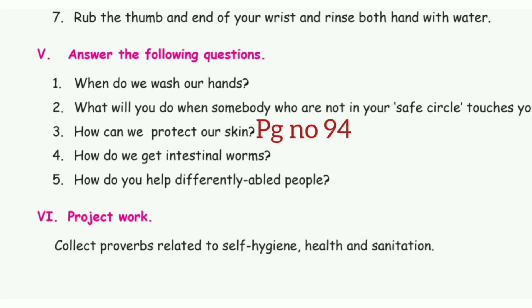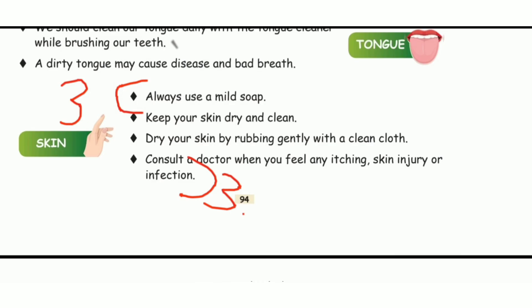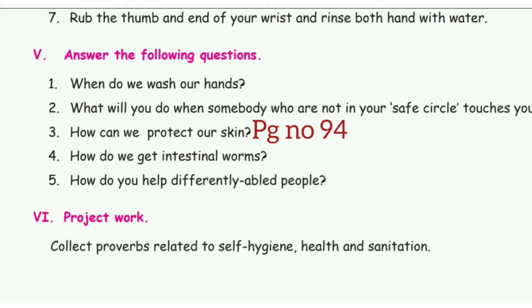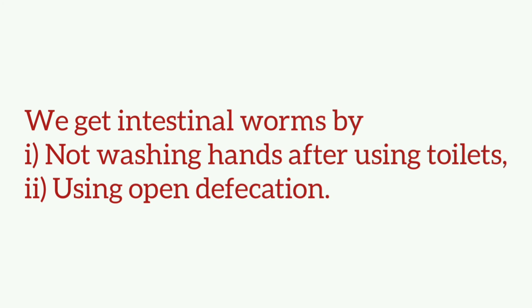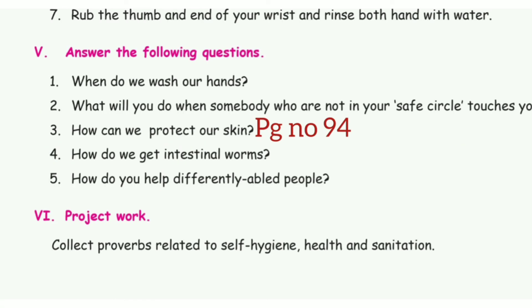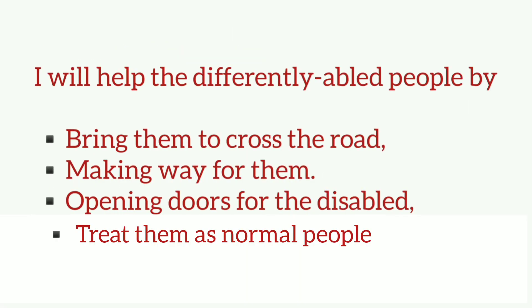Third question: how can we protect our skin? Take page number 94 — the last four points. The answer is: always use a mild soap, keep your skin dry and clean, dry your skin by rubbing gently with a clean cloth, and consult a doctor when you feel any itching, skin injury, or infection. Fourth question: how do we get internal worms? We get internal worms by not washing hands after using the toilet and through open defecation. Fifth question: how do you help differently abled people? The answer is: I will help them cross the road, make way for them, open doors for them, and treat them as normal people.